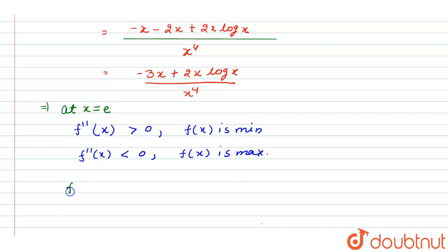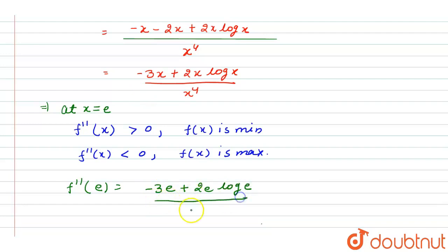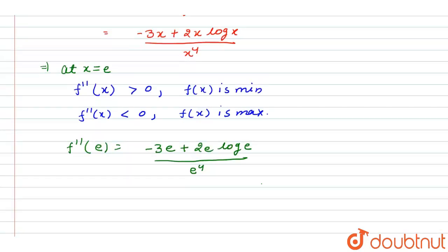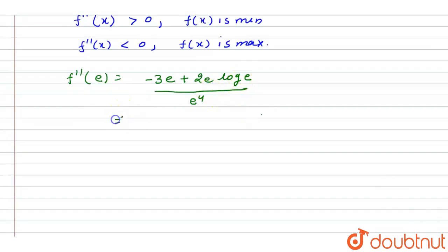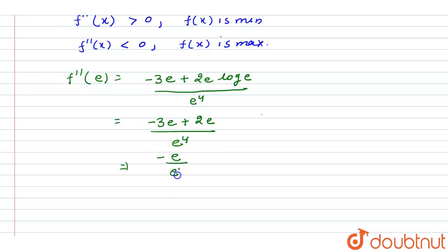Putting x = e into f''(x): we get (−3e + 2e·log e) / e⁴. Since log e = 1, this becomes (−3e + 2e) / e⁴ = −e / e⁴ = −1/e³. Since this value is less than 0, f(x) is maximum at x = e.